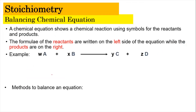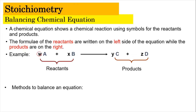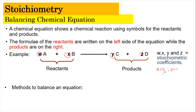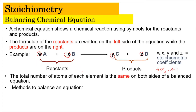So, balancing chemical equations. A chemical equation shows a chemical reaction using symbols for the reactants and products. The reactants are written on the left-hand side, meanwhile the products are written on the right-hand side. There are stoichiometry coefficients W, X, Y, and Z, which are written as numbers — for example, 2 for carbon dioxide. W, X, Y, and Z are basically the balancing coefficients.